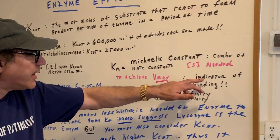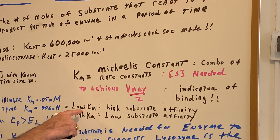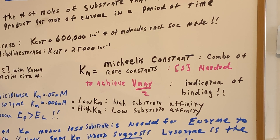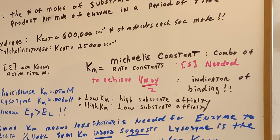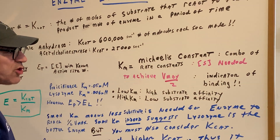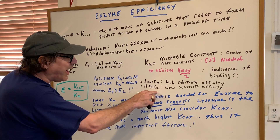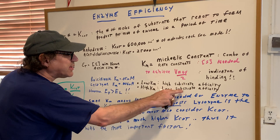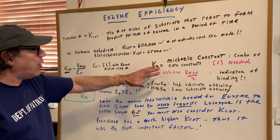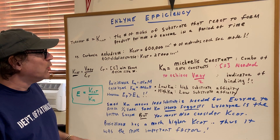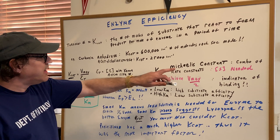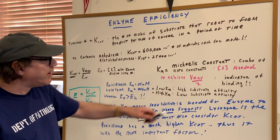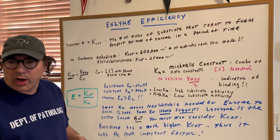The KM is the amount of substrate needed to get you to half Vmax. It's also an indicator of binding. For instance, if you have a low KM, it means you only need a small amount to get going to half speed — so low KM means high substrate affinity. A high KM means you need a lot of substrate to get going, so that means low substrate affinity. Two ways to look at KM: it's the amount of substrate needed to reach half Vmax, or it gives an indication of how strong the binding is.